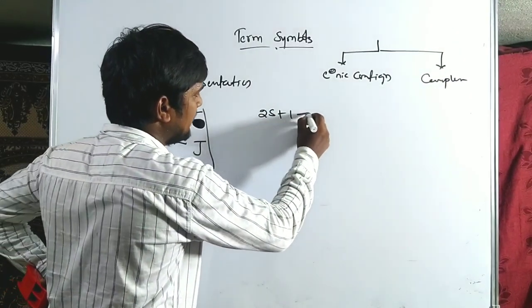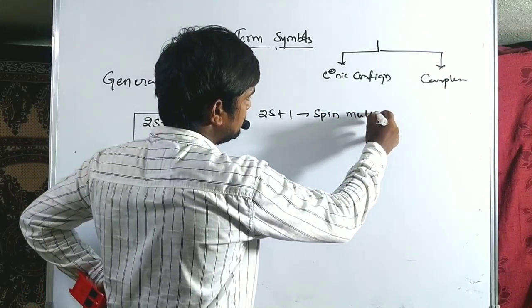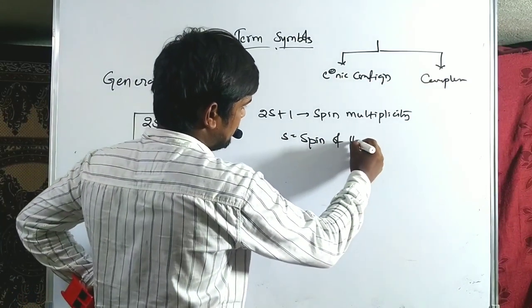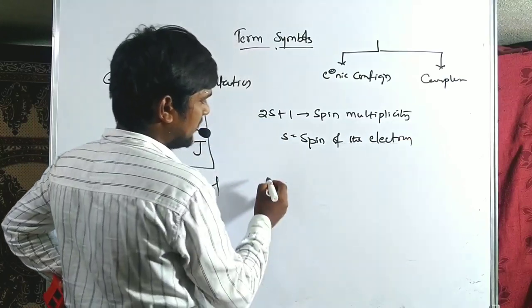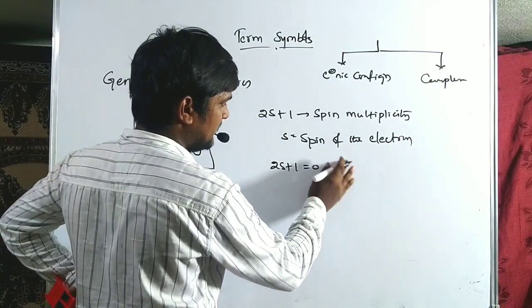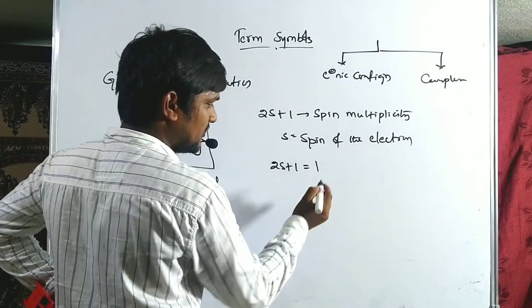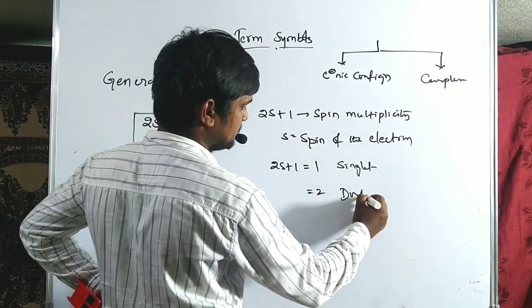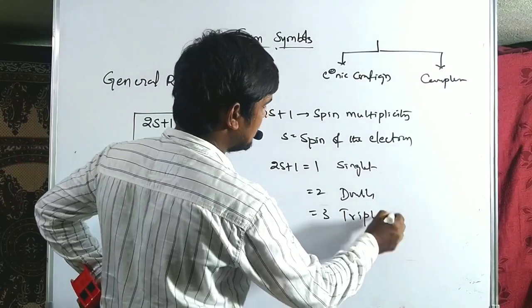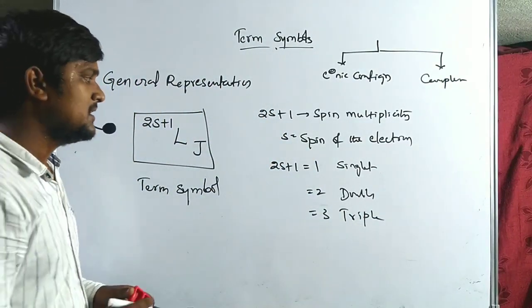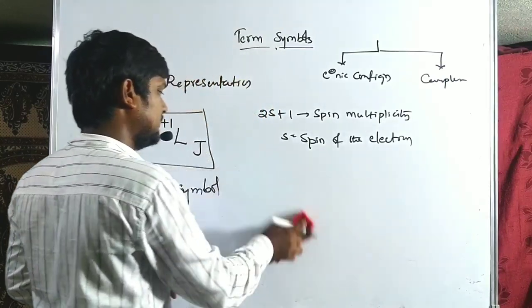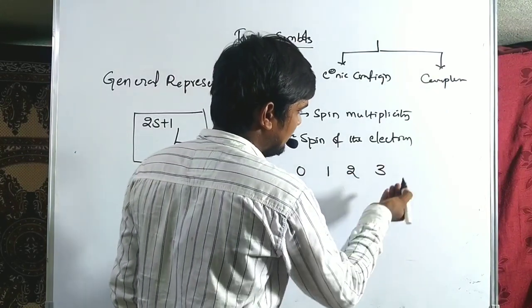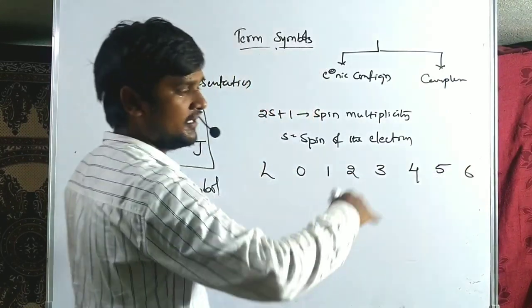Here, 2S+1 indicates spin multiplicity, where S is the spin of the electron. If 2S+1 equals 1 it is called singlet; if 2 it is doublet; if 3 it is triplet — these are the values of spin multiplicity. The L values go 0, 1, 2, 3, 4, 5, 6 and so on.